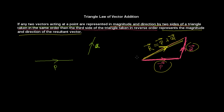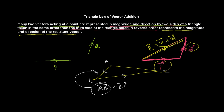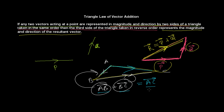So this is what the triangle law says. If I have a triangle with vertices A, B, and C, and I want to add vector AB and vector BC — these two vectors are represented in magnitude and direction by sides AB and BC. Then the resultant is given by the third side taken in opposite order, which is vector AC. So AB + BC = AC.